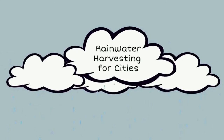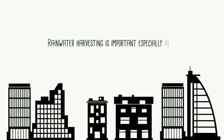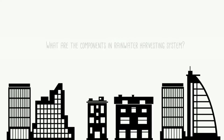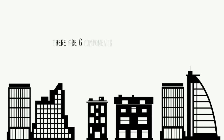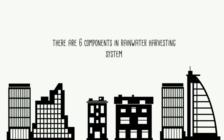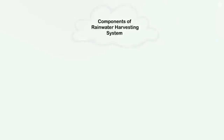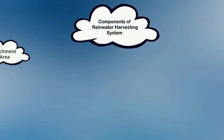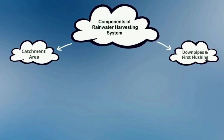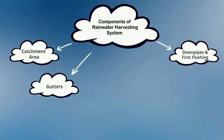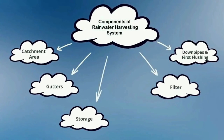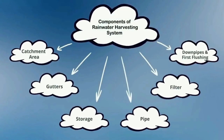Rainwater harvesting for cities. Rainwater harvesting is important especially in cities. There are 6 components in a rainwater harvesting system: catchment area, downpipes and first flushing, gutters, filter, storage, and pipe.